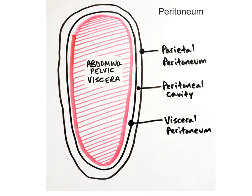The serous membrane of the abdominopelvic cavity is the peritoneum. The parietal peritoneum lines the abdominal wall and covers the inferior surface of the diaphragm. The visceral peritoneum covers the abdominal viscera. The peritoneal cavity is located between these two layers and, like the other cavities, also contains a small amount of lubricating fluid. This fluid prevents irritation and physical wear and tear caused by the movement of the internal organs against each other.